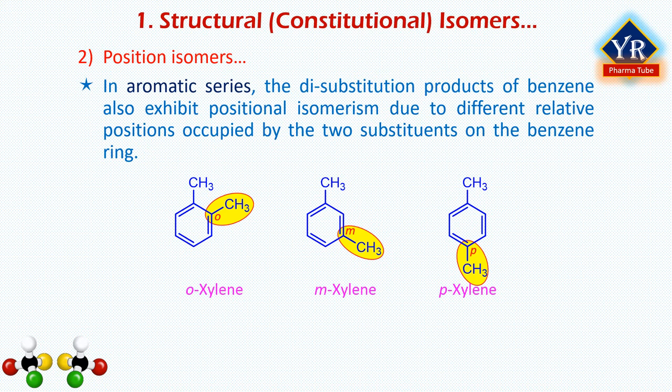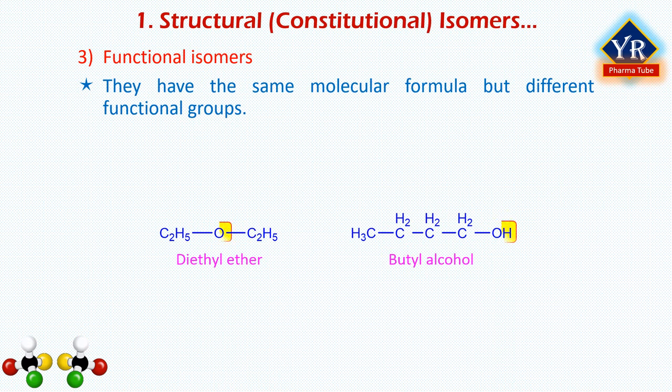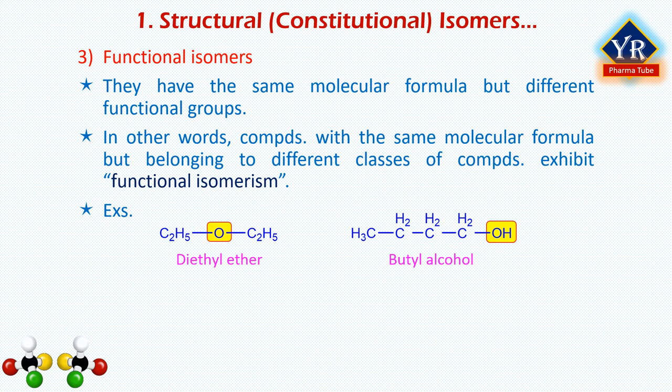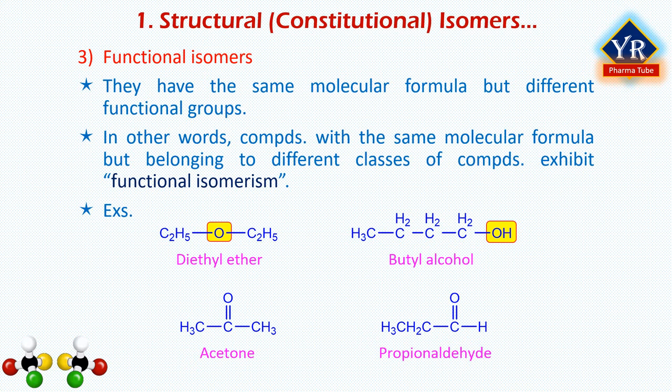The third type is functional isomers. When two compounds have the same molecular formula but possess different functional groups, they are called functional isomers and the phenomenon is termed functional isomerism. Diethyl ether and butyl alcohol both have the molecular formula C4H10O but contain different functional groups — the ether function and the alcohol functionality respectively. Acetone and propionaldehyde, both with molecular formula C3H6O, are functional isomers — in acetone the functional group is ketonic while in acetaldehyde it is aldehydic.